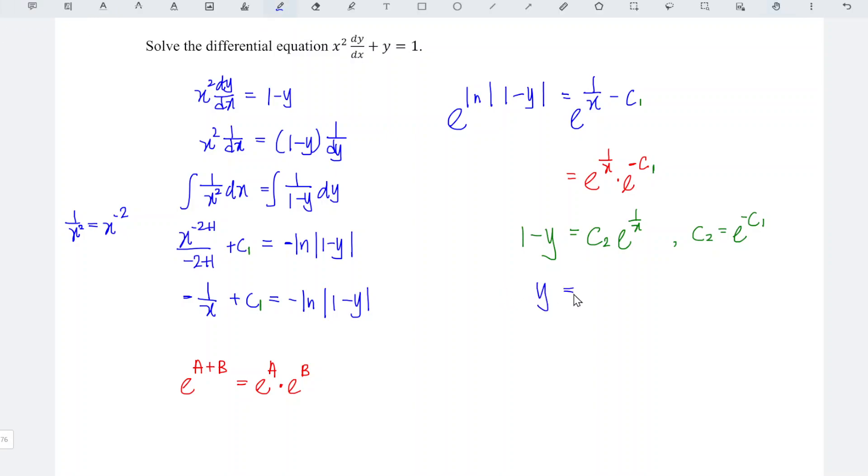We should obtain y equals 1 minus c2 e to the power of 1 over x. If we don't like the negative, we can change to positive by introducing another dummy c3, where c3 equals minus c2. So we have y equals 1 plus c3 e to the power of 1 over x, and we're done. That's all for this video. Thanks for watching. Hope you like this. See you.